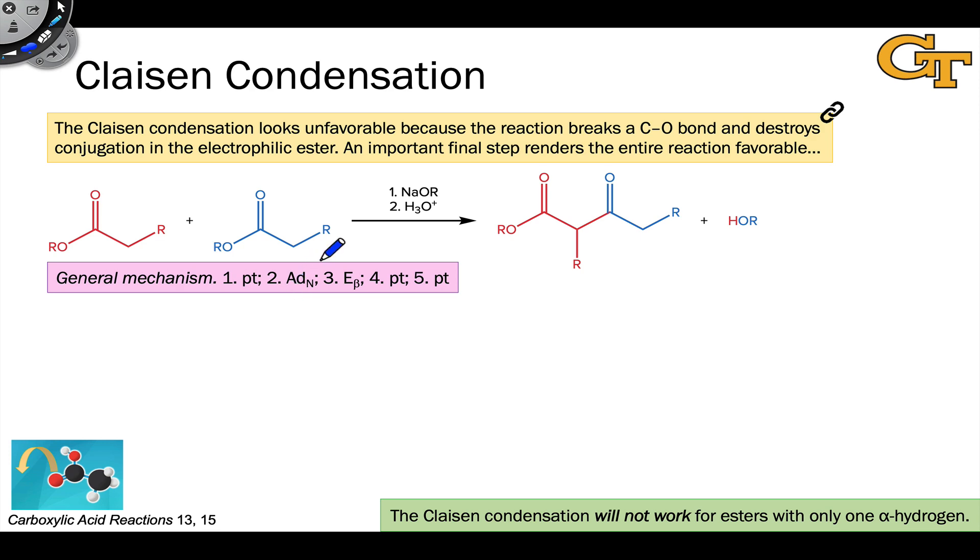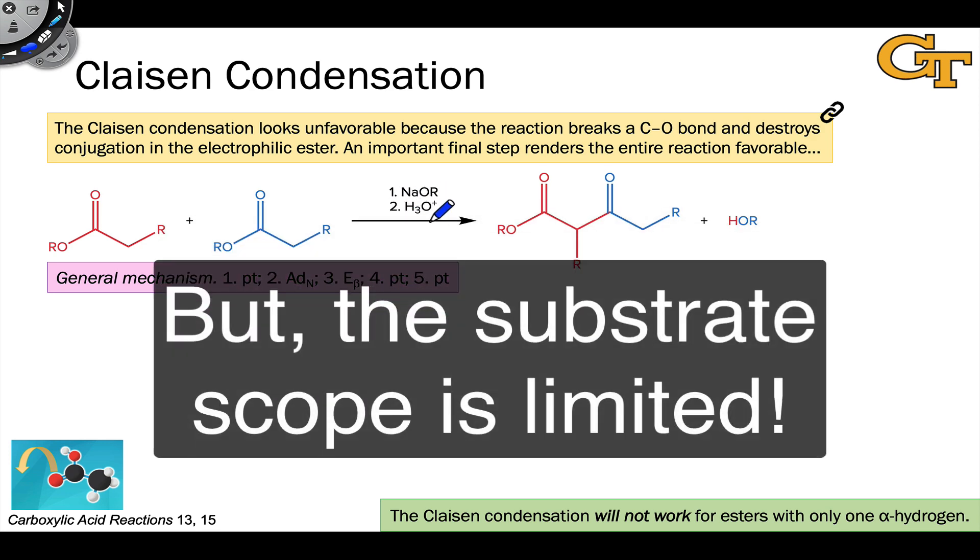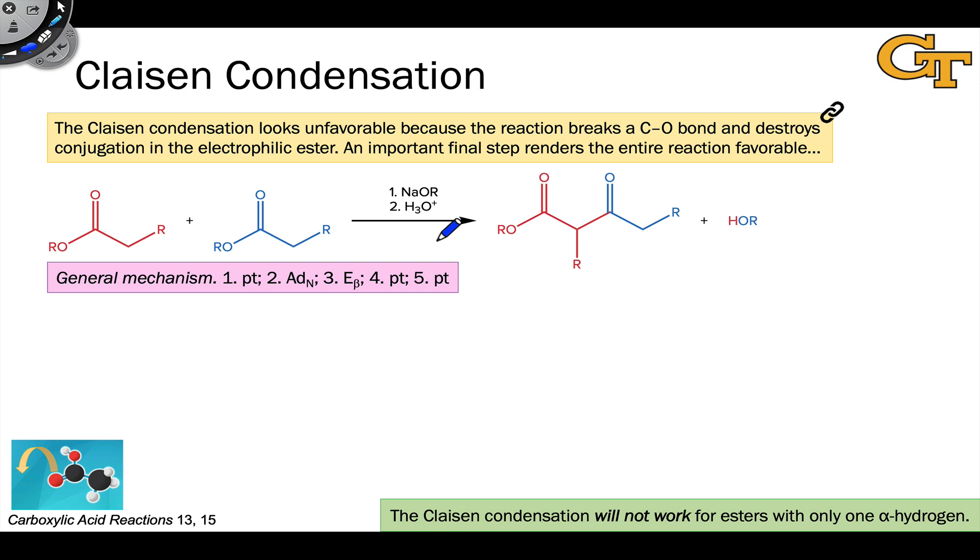However, the reaction still goes, provided we use a full equivalent of alkoxide base followed by acidic workup. This is because of an important proton transfer step that occurs within the mechanism. While from a bird's eye view, the key bond formation involves nucleophilic addition followed by beta elimination, it's this fourth step, the key proton transfer, that really drives the reaction thermodynamically and puts an important constraint on the types of substrates that work.